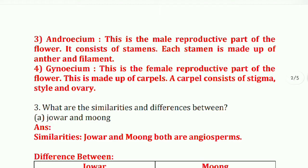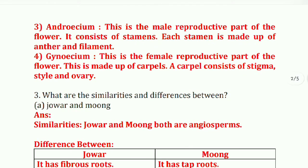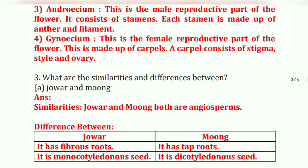Next, gynoecium — this is the female reproductive part of the flower. It is made up of carpels, and carpels consist of stigma, style, and ovary.